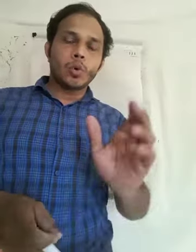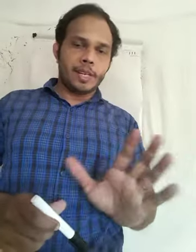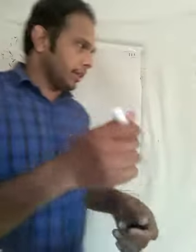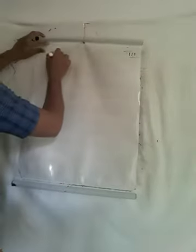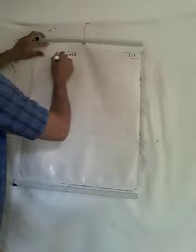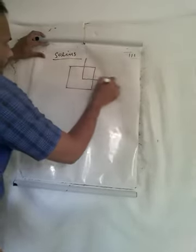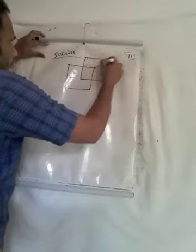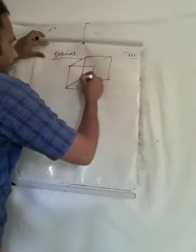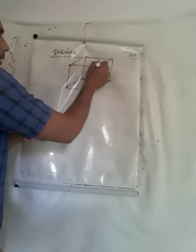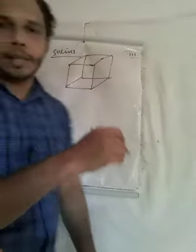We are going to discuss solid shapes. You have already been studying these from small classes onwards — what are solid shapes? Cube, cuboid, cylinder — these are things you already know. This is the cube. A cube means all sides and faces are equal; that is the concept of the cube.